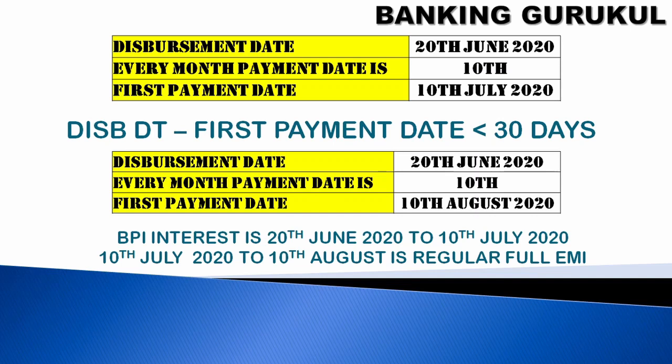Since EMI is monthly, you need a minimum gap of 30 days. If you take the disbursement date minus the first payment date, it is less than 30 days. So 10th July cannot be your first EMI date. Therefore, the 10th July gets moved to 10th August.